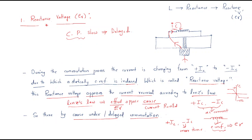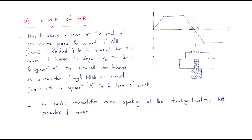In commutator segments, we have inductance. Whenever inductance is present, current reversal takes place, meaning an EMF is generated. This generated EMF will oppose the current reversal — that is why we have delayed commutation. The next reason is the cross-magnetizing effect of the armature reaction.